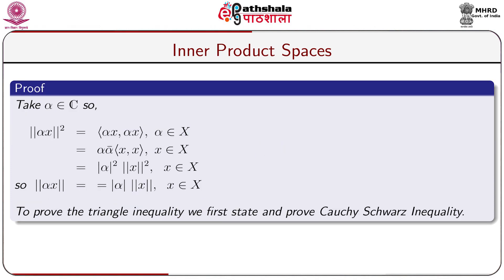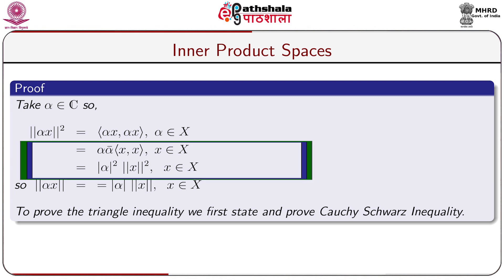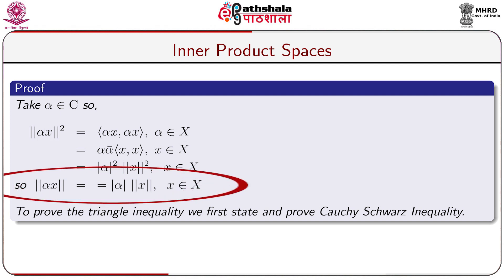Take alpha belonging to C, that is alpha is a complex number. Then norm of alpha·x squared equals ⟨alpha·x, alpha·x⟩, which equals alpha times alpha-bar times ⟨x, x⟩, which equals modulus of alpha squared times norm of x squared. So norm of alpha·x equals modulus of alpha times norm of x. Thus, the second norm axiom is satisfied.